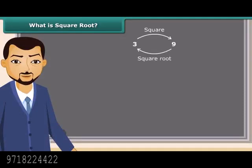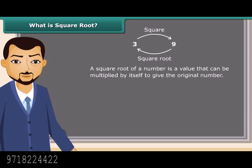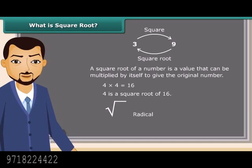Square root is an inverse operation of squaring. It is a value that can be multiplied by itself to give the original number. So we can say when 4 is multiplied by 4 we get 16, which means 4 is a square root of 16. Square root is represented by a special symbol called the radical. Square root of 25 is 5.